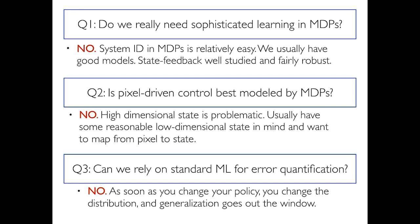So we have some issues. MDPs, which I have spent the last five years thinking about, don't necessarily solve all the hard problems. They don't get us everywhere. Pixel-driven control in particular is probably not going to be best modeled by an MDP. For linear control systems, the best thing to do is take some data, fit your model, and then treat the model as true — that's optimal. Max Simchowitz and Dylan Foster just proved it's minimax optimal.